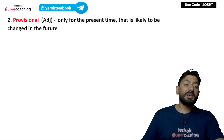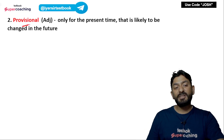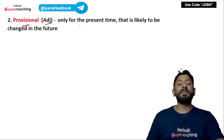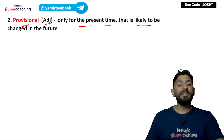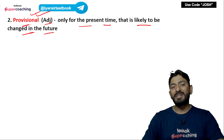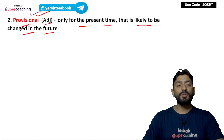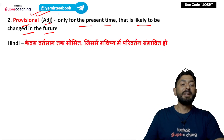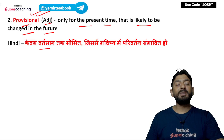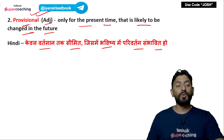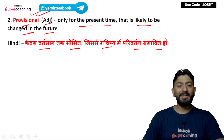The next word today is 'provisional', which is an adjective meaning only for the present time, that is likely to be changed in the future. Simple terms में provisional का मतलब temporary — जो अभी कुछ समय के लिए है, आगे वो change हो सकता है. Hindi में: केवल वर्तमान तक सीमित, जिसमें भविष्य में परिवर्तन संभावित हो — that is provisional.